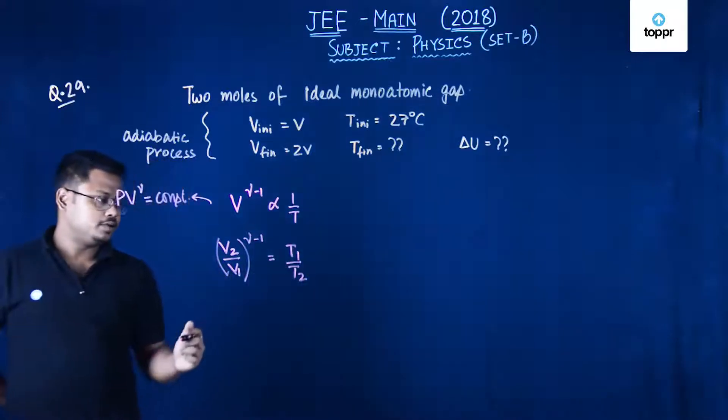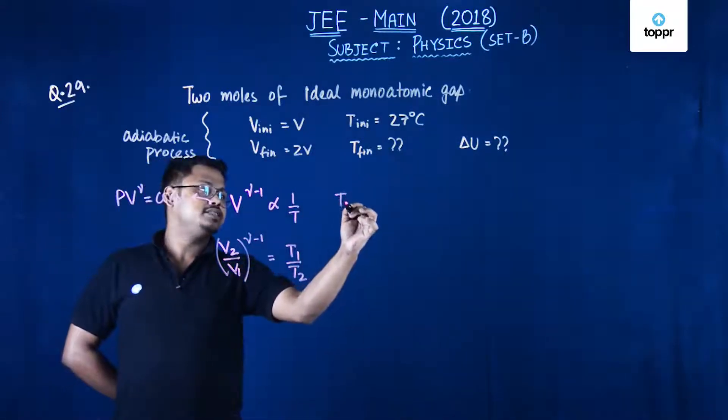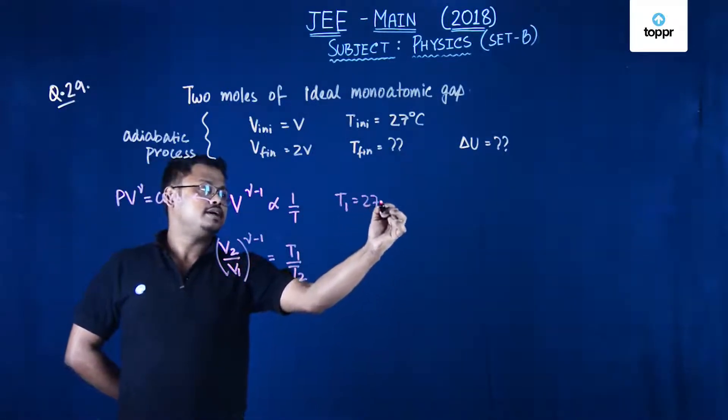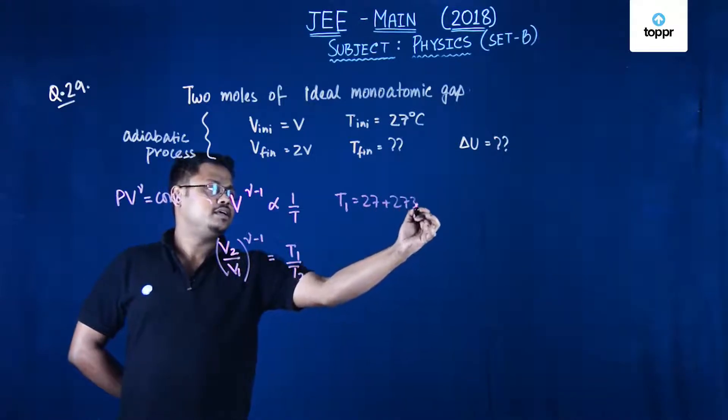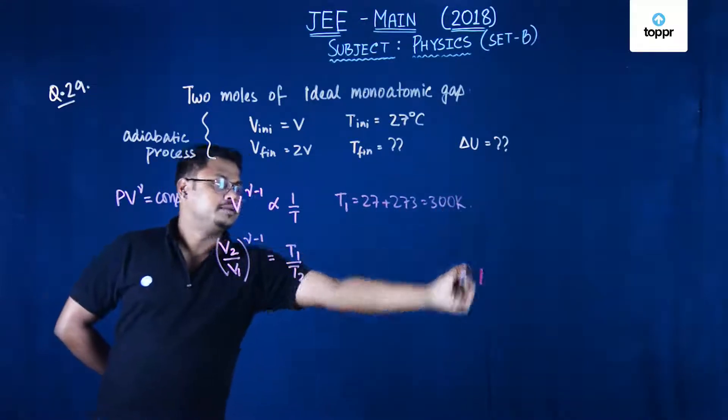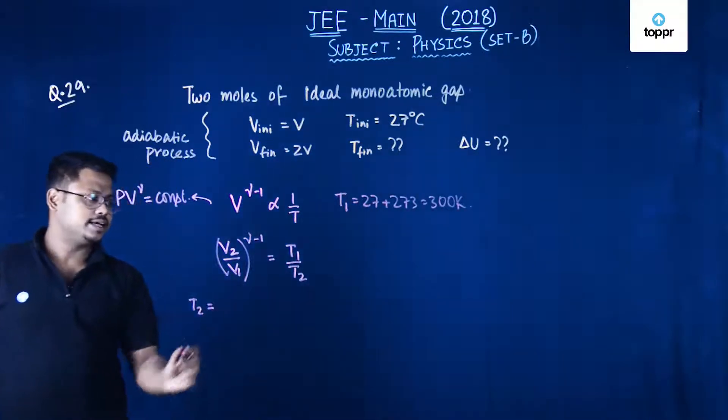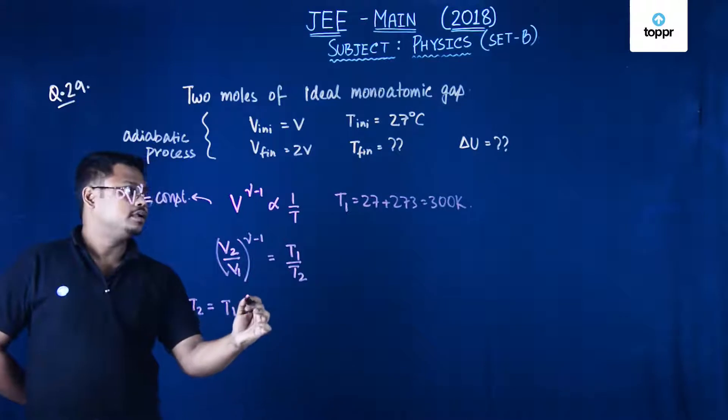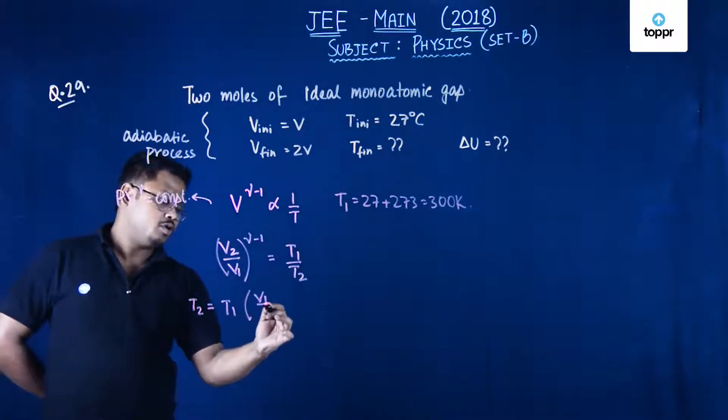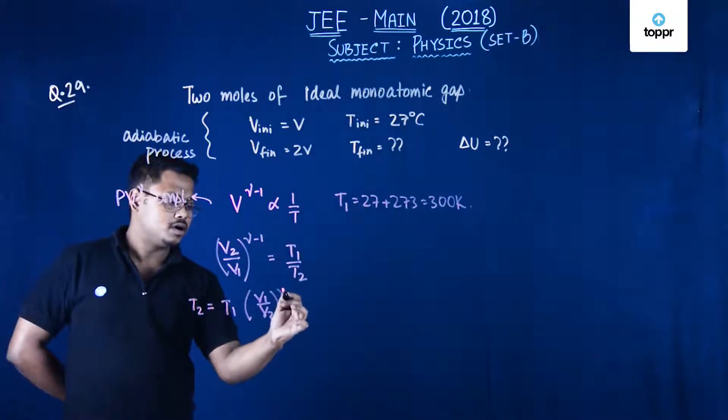In this particular case T1 is given as T initial, that is 27 plus 273 equals to 300 Kelvin. So T2 can be written as T1 into V1 upon V2 whole to the power gamma minus 1.